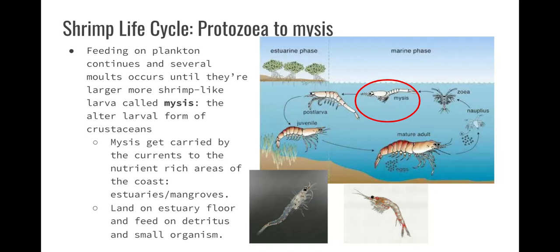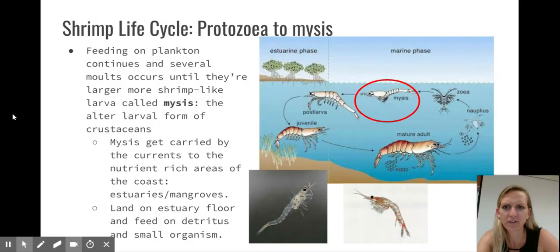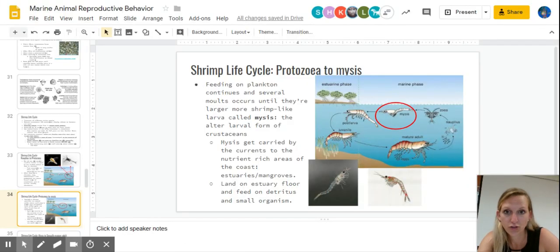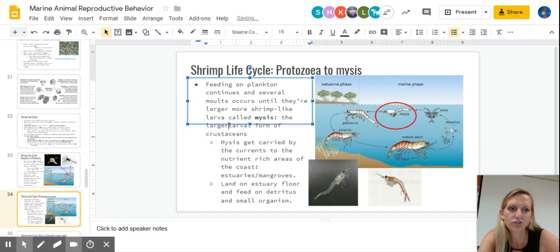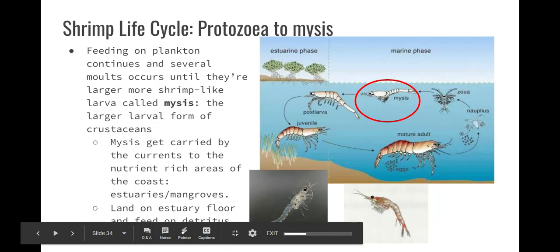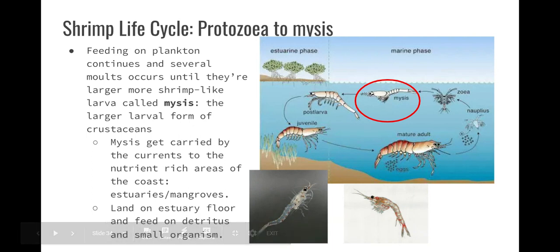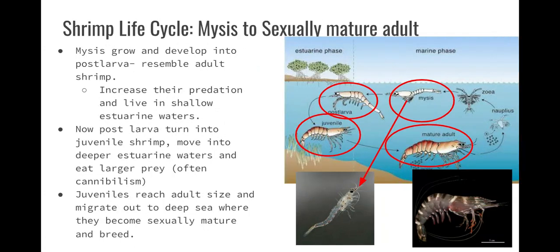From protozoa to mysis: feeding on plankton continues and several molts will occur. They metamorphose a few more times until they're more shrimp-like and are now called mysis — the larger larval form of crustaceans. The mysis are carried through currents to nutrient-rich areas off the coast, like an estuary or mangrove — good for nutrients, oxygen, and shelter. They'll land on the estuary floor and feed on dead, rotting, decaying things and smaller organisms.